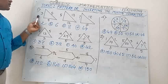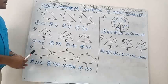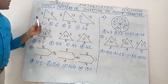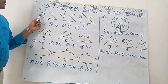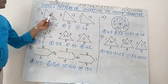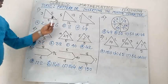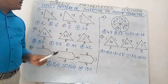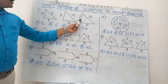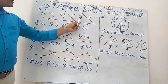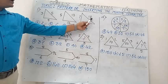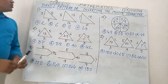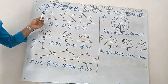Number 1. You can see 3 triangles are there. The sides of the first triangle are 3, 4, 5. The second triangle has sides 5, 12, 13. And the third triangle has a question mark, 15, 17.